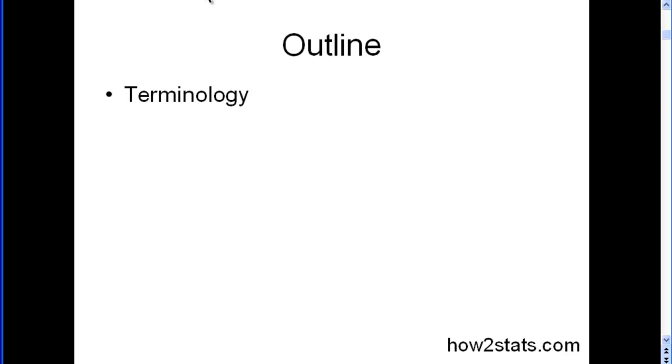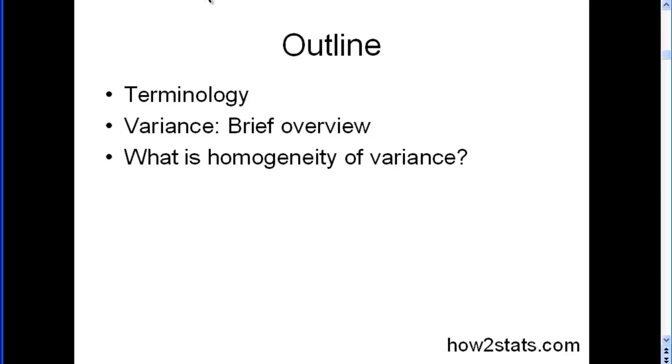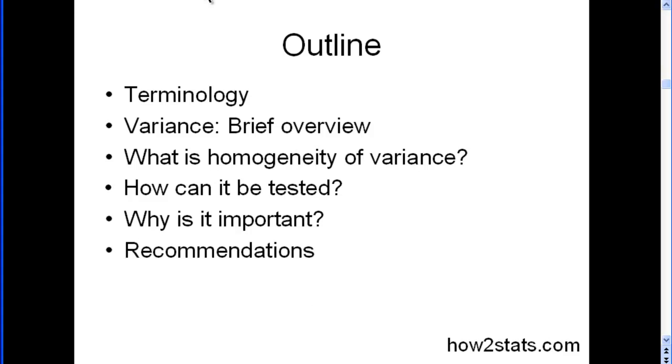So here's the outline. I'm going to go through some terminology first. Then I'm going to very briefly remind everyone what variance is. I'm going to answer the question, what is homogeneity of variance? How can it be tested? Why is it important? Some recommendations, and then some references.